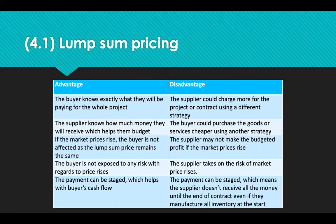What other pricing methods could Bradley have suggested that would have resulted in lower risk for him? The advantages of lump sum pricing are that the buyer knows exactly what they're going to pay for the whole project, and the supplier knows how much they're going to be paid, which helps them to budget. If the market rises, the buyer may not be affected as the lump sum price remains the same, so the buyer isn't exposed to any risks with regards to price rises. The payments can be staged, which will help the buyer's cash flow. But the downside is the supplier could charge more than necessary, and the buyer could purchase the goods or services cheaper using another strategy. The supplier may not be able to make the budgeted profit if the supply market rises, and they take on the risk of market price rises. Also, as payments are staged, the supplier doesn't receive all the money until the end of the contract, even if they manufactured all inventory at the start.